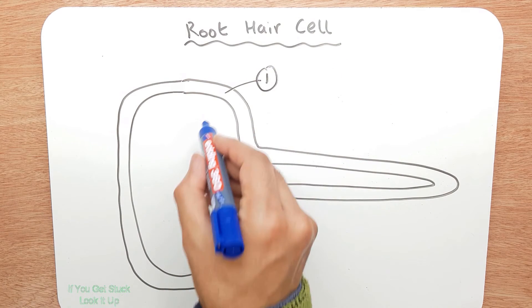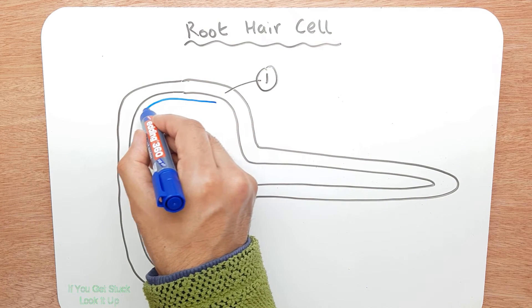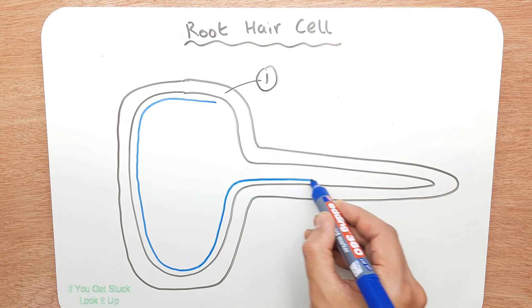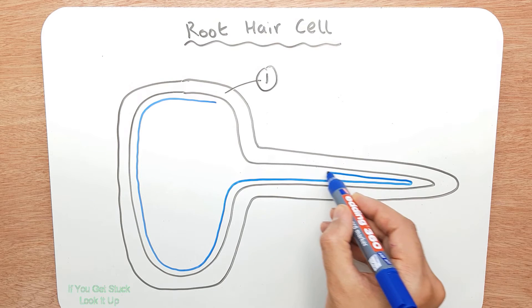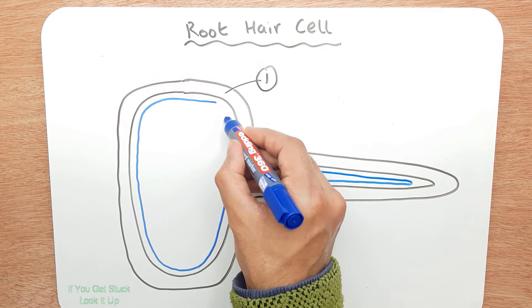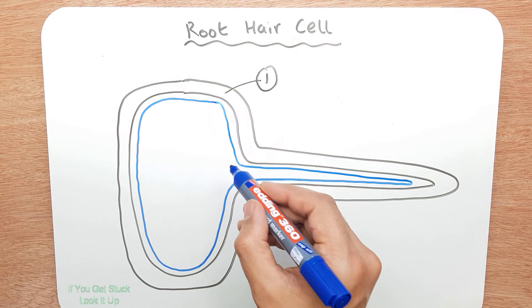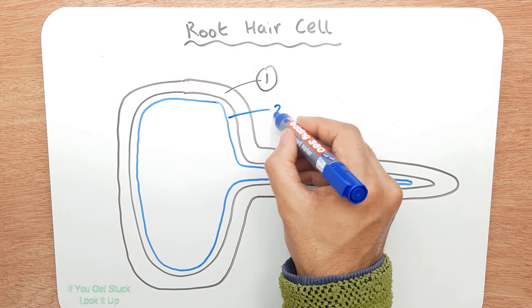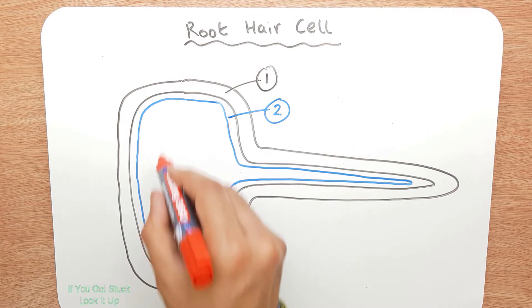The next one is what I call the plastic bag that holds everything together. We've drawn it separated from the cell wall, but in reality it's pushed up right against it.